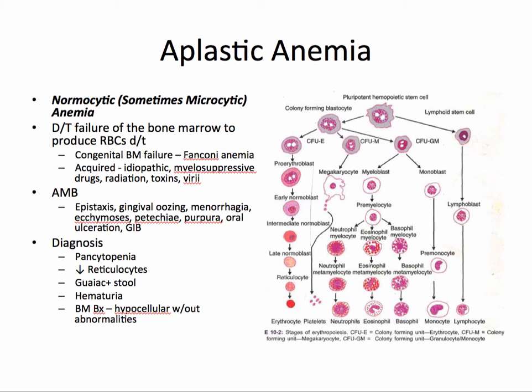Aplastic anemia is manifested by epistaxis, gingival oozing, menorrhagia, ecchymosis, petechiae, purpura, oral ulceration, and GI bleeds.